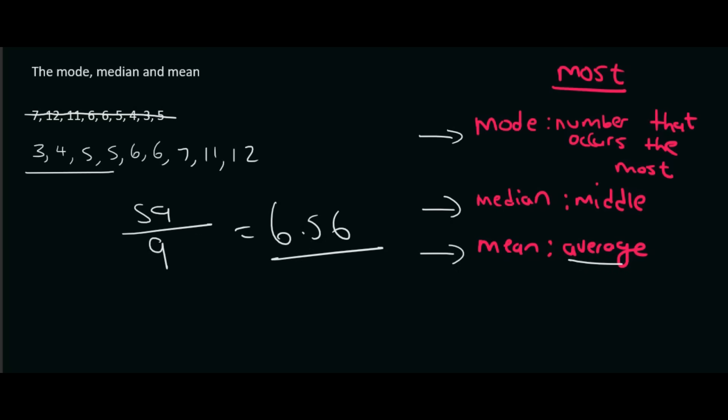What that means is if you take all of these numbers, let's say this is the number of goals that a hockey team scores per match. So in the first match they scored 3, then they scored 4, then they scored 5. One of the matches they scored 12. But the average is about 6.5. They usually score about 6.5 goals per match. That's what the average means.